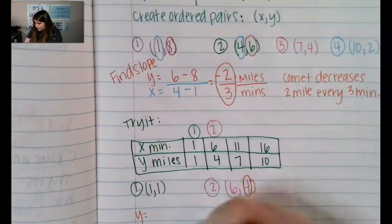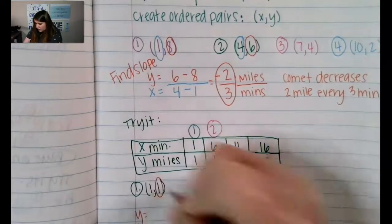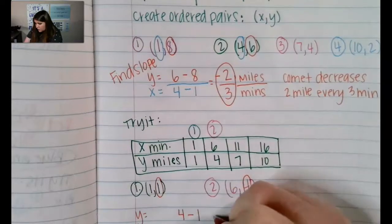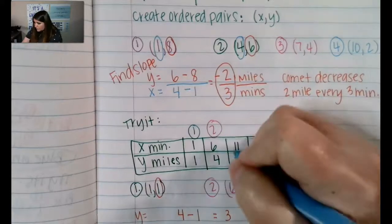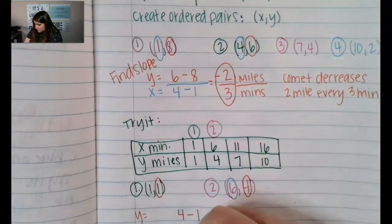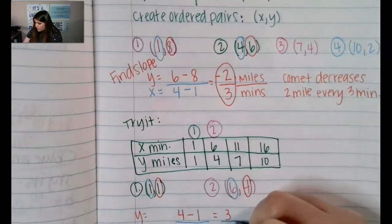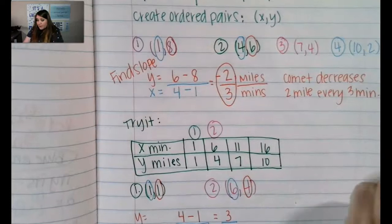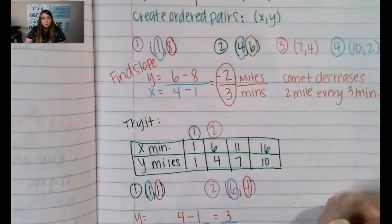I have y value of point two which is four, minus y value of point one which is one, and that gives me three. Now the x values: I have six minus one, and that gives me five. So my slope is three over five.